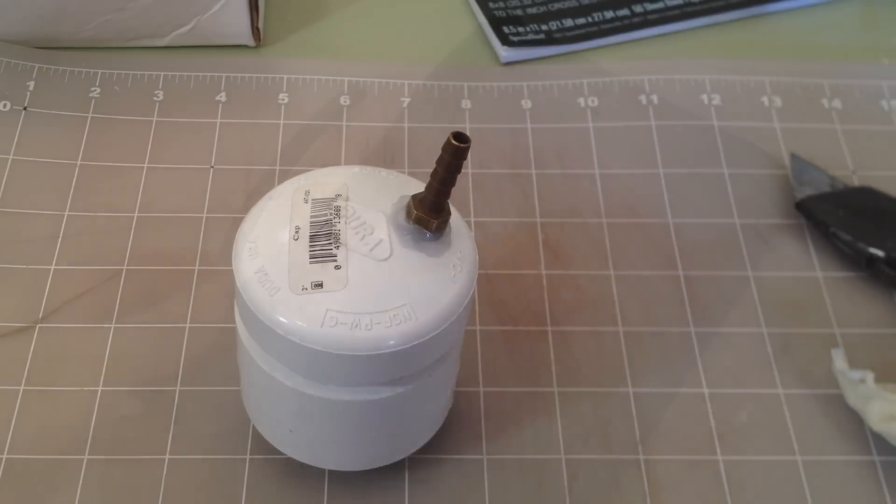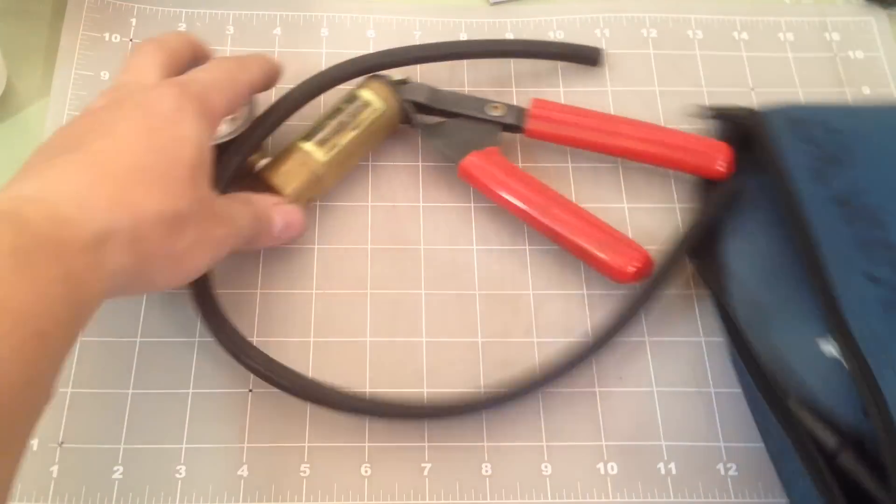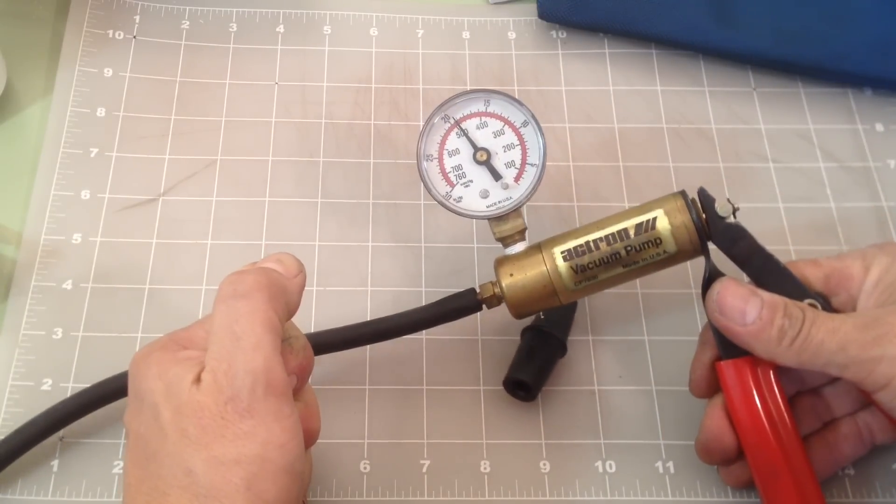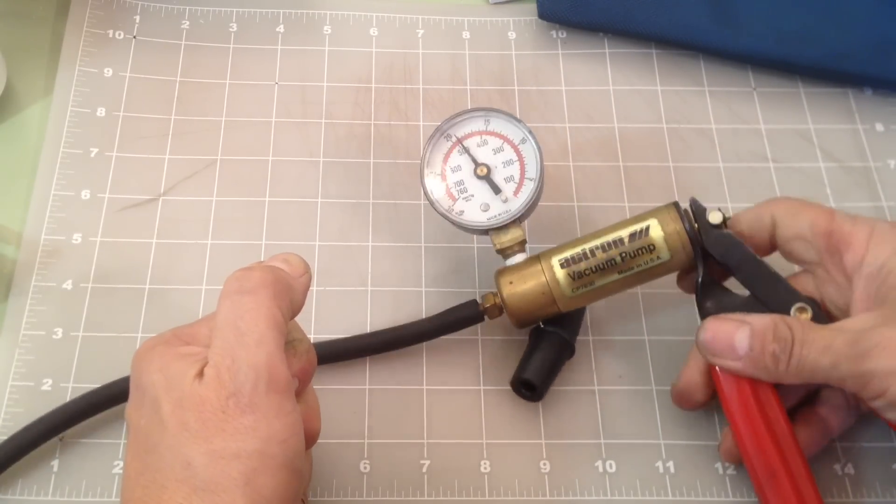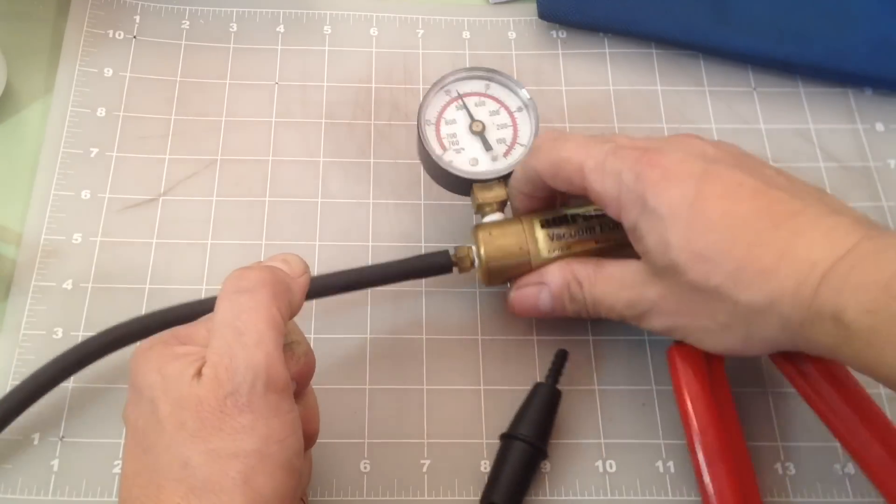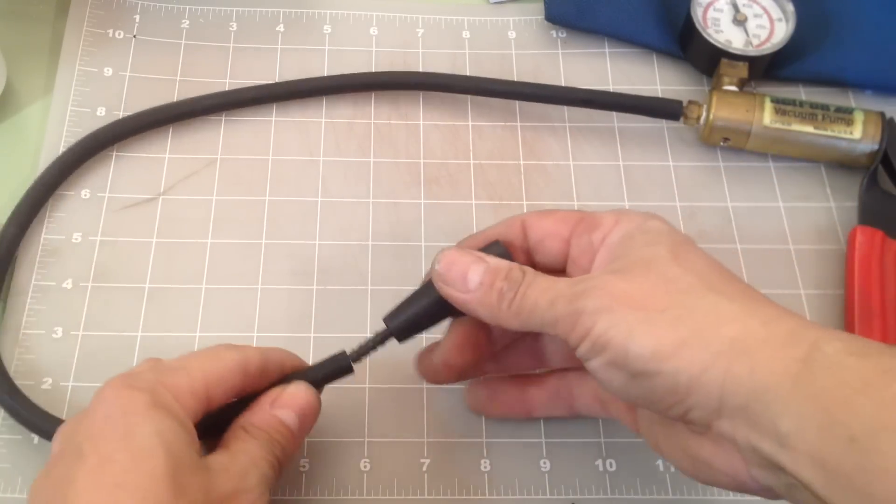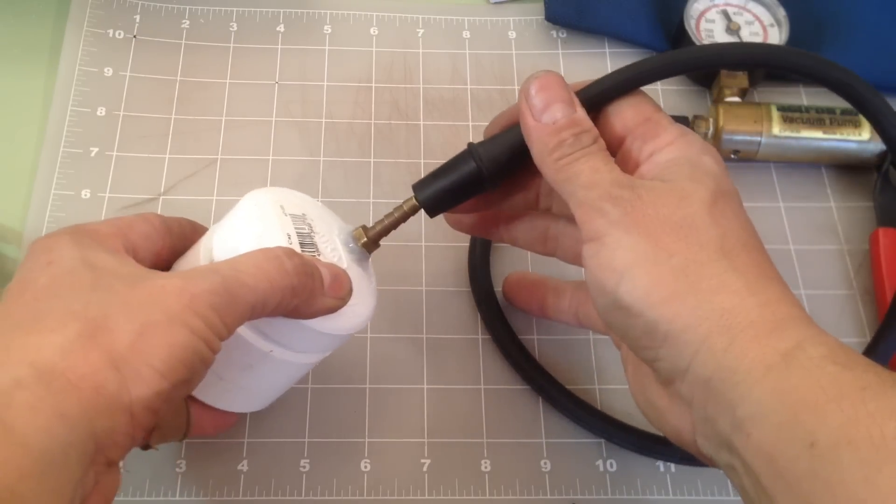To evacuate the air I'm using a vacuum test kit which I bought at an auto parts store for around 20 bucks. This test kit comes with the vacuum gauge attached and a purge valve to release the pressure. Next I connect the rubber adapter to the hose, then I connect it to the barb fitting on the chamber.